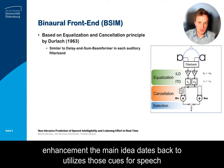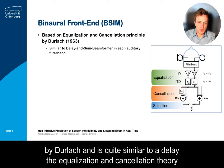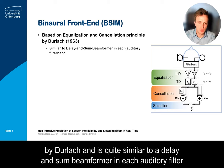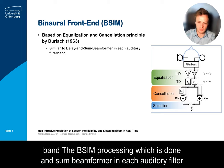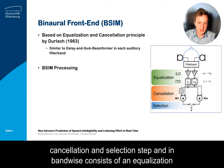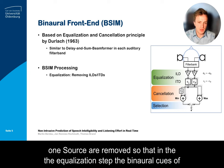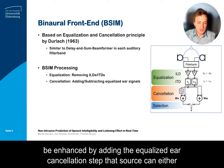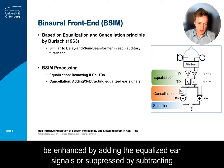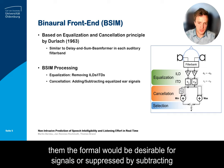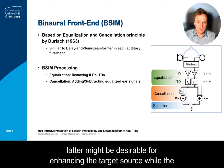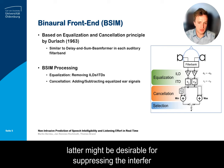The main idea dates back to the equalization and cancellation theory by Durlach, and is quite similar to a delay-and-sum beamformer in each auditory filter band. The BISIM processing, done band-wise, consists of an equalization, cancellation, and selection step. In the equalization step, the binaural cues of one source are removed so that in the cancellation step, that source can either be enhanced by adding the equalized ear signals or suppressed by subtracting them. The former is desirable for enhancing the target source, while the latter is desirable for suppressing the interferer source.